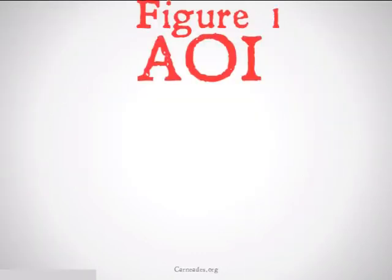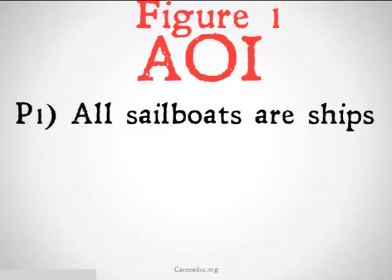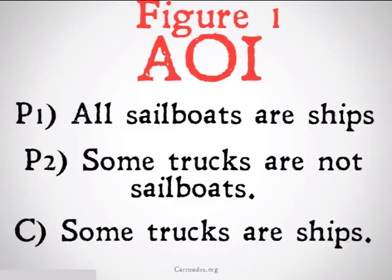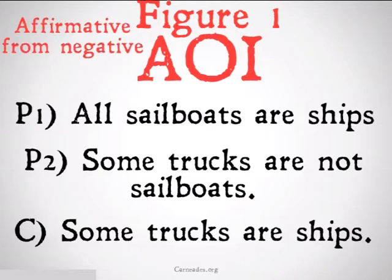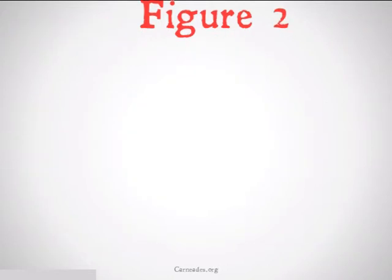Figure 1, AOI, is going to look like this: all sailboats are ships; some trucks are not sailboats; therefore some trucks are ships. Clearly this is going to be invalid because it tries to draw an affirmative conclusion — 'some trucks are ships' — from a negative premise, 'some trucks are not sailboats.' Affirmative from negative — it's going to be a fallacy.